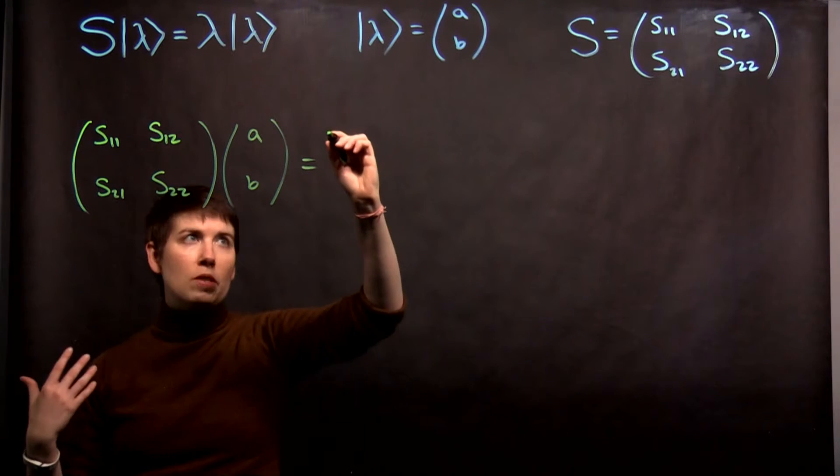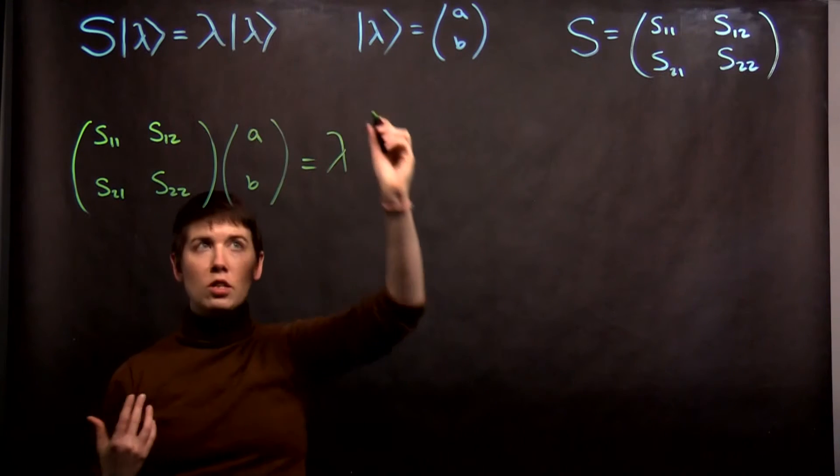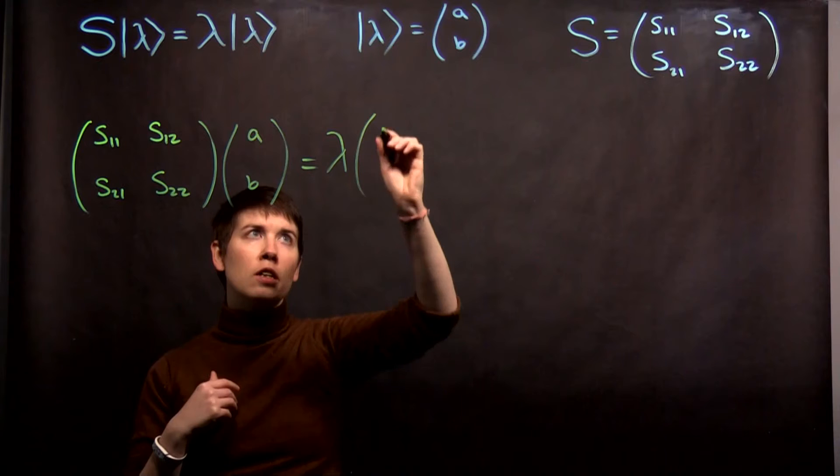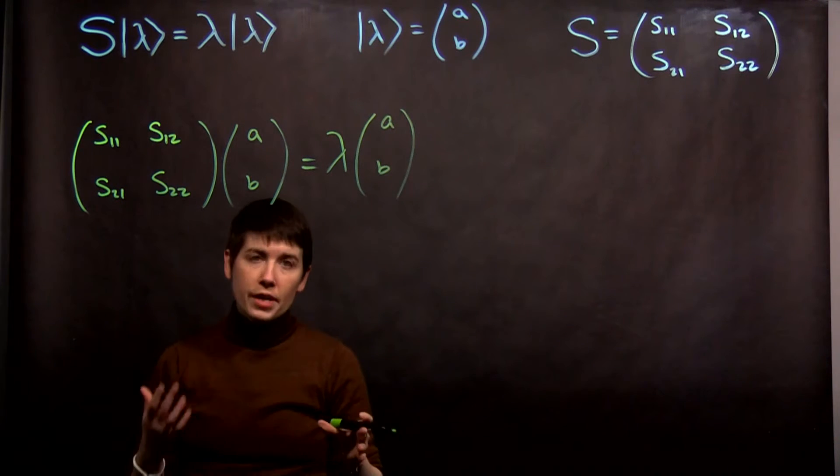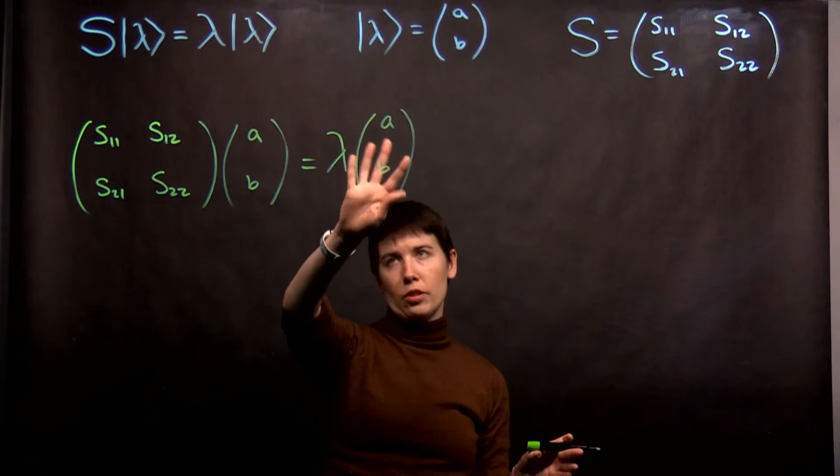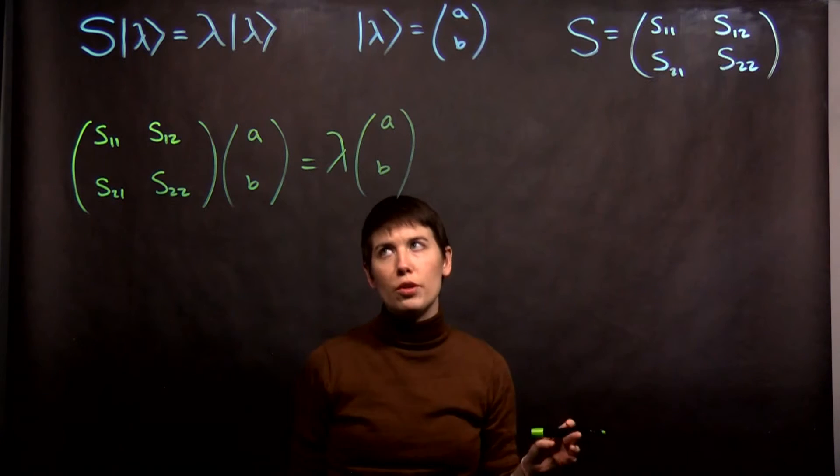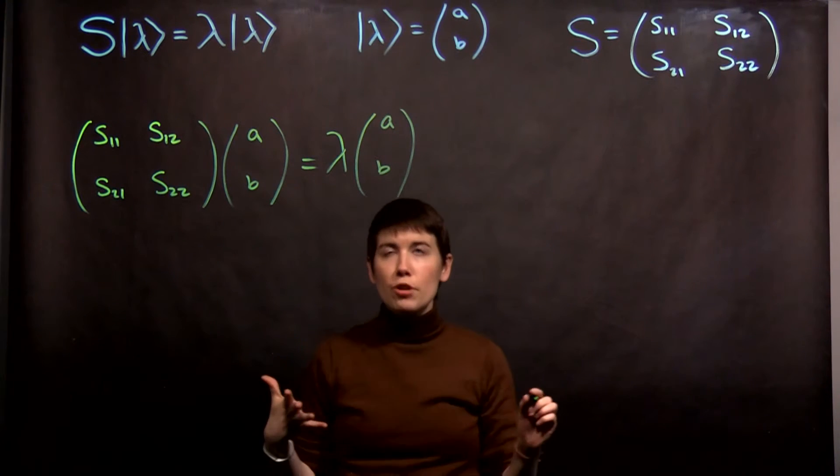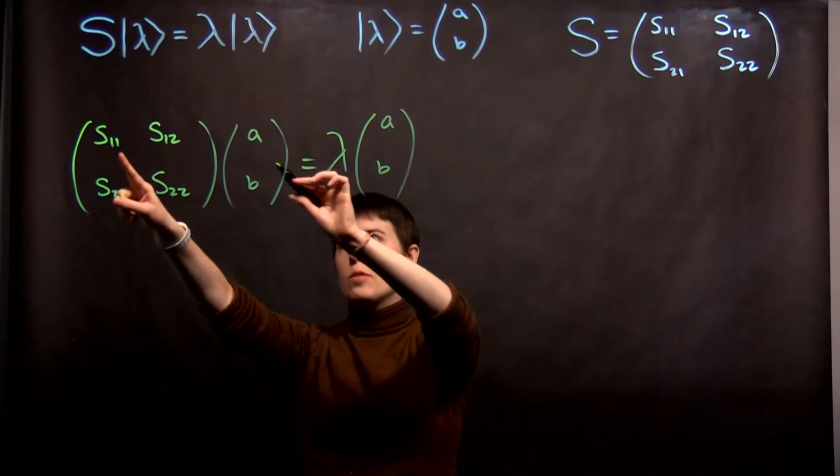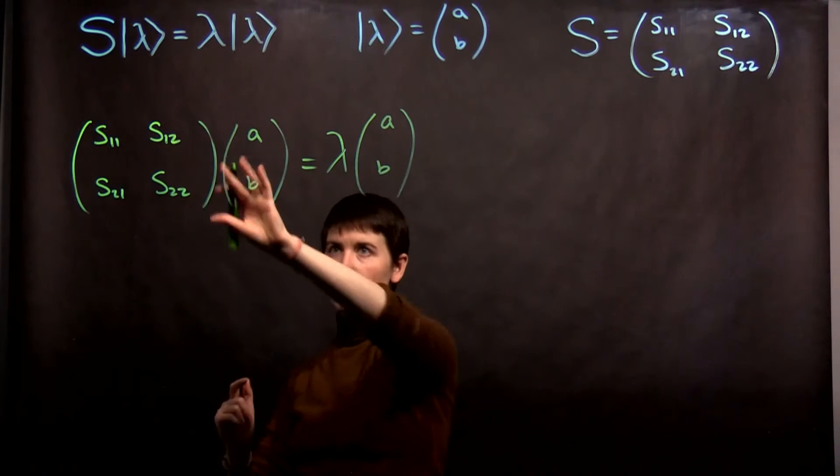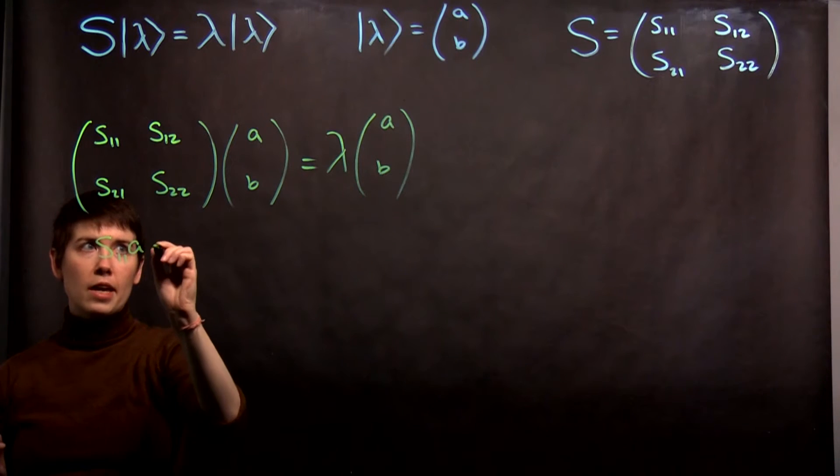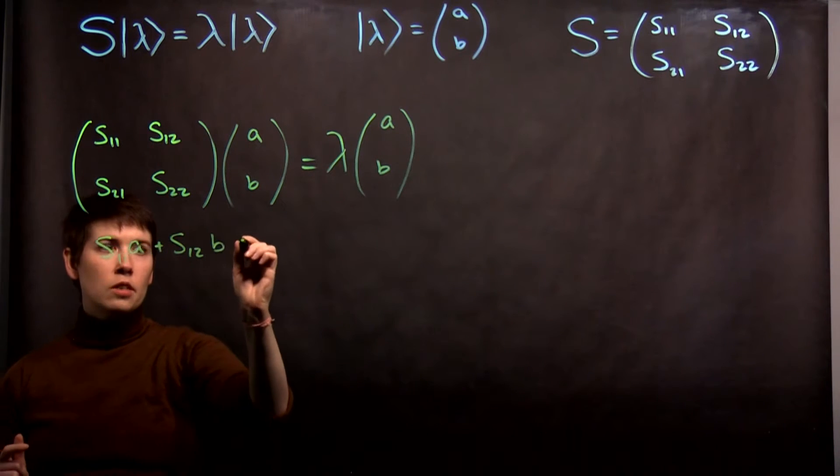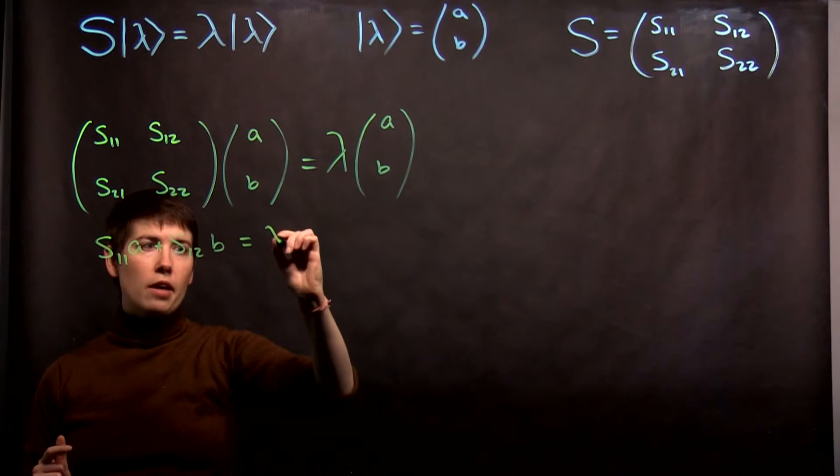And then I'm going to say that's going to be some scalar coefficient, lambda, which we're also trying to find, times AB. One option is you can actually move this over to the left, there's different ways you can write this. And briefly, what this is going to be, if I then focus on what's happening on the left, is that S11 times A plus S12B equals lambda A, right?